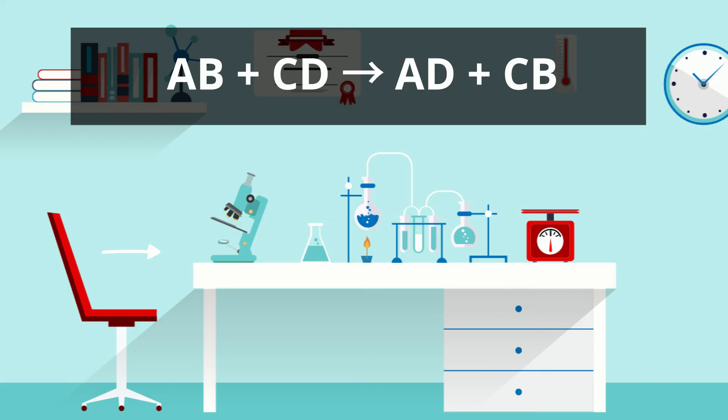During the reaction, the ions B and D change places. In an ionic compound, the positive metal ion is always written first, followed by the negative non-metal ion. Therefore, A and C must always come first, followed by D and B. An example of a double replacement reaction is sodium chloride reacting with silver fluoride.